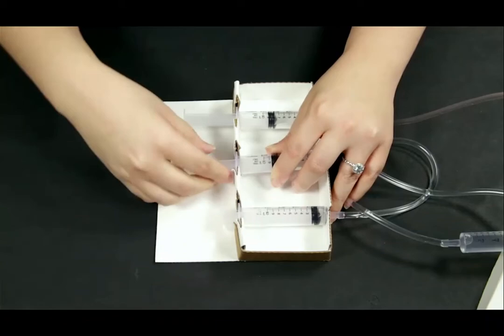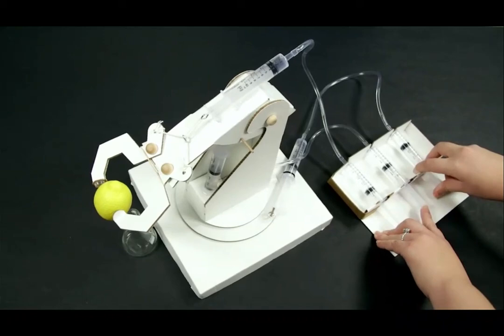Step 44: Put the 3 loose syringes into the control box. Step 45: Now you're ready to use the robot arm.